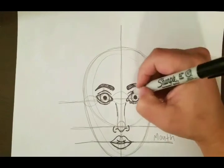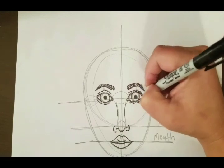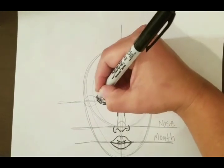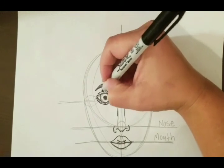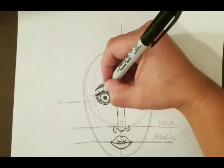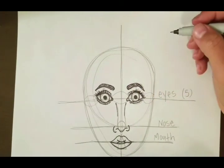Then I went ahead and added my little eyelashes. Decided to make it a girl. The messier they are, the more realistic they're going to end up looking. You do want to have a couple of thin ones, a couple of thick ones, just give it that variety.